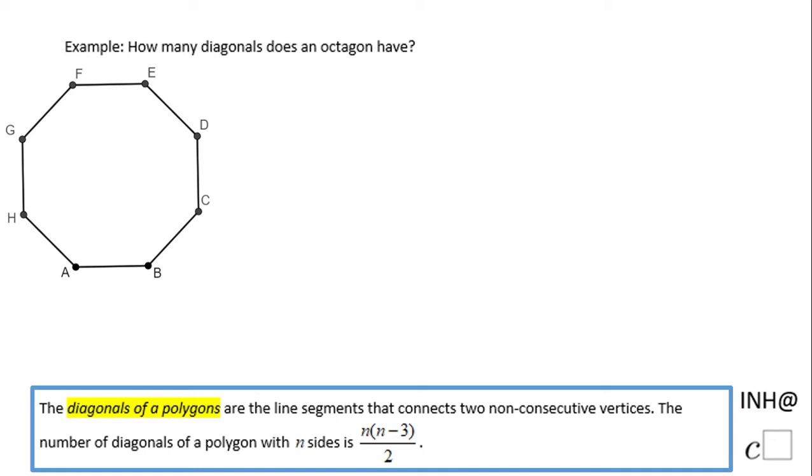Welcome or welcome back to I Need Help at C Square. In this example, we are going to find how many diagonals does an octagon have. If you notice here, I said what the diagonal is. The diagonals are the line segments that connect two non-consecutive vertices.